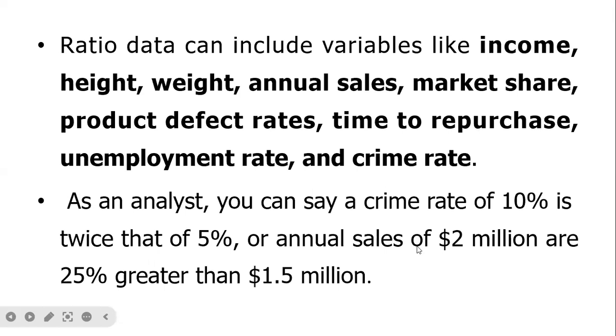Ratio data can include variables like income, height, weight, annual sales, market share, product defect rates, time to repurchase, unemployment rate, and crime rate. As the analyst, you can say crime rate of 10 percent is twice that of 5 percent, or annual sales of $2 million, 25% is greater than $1.5 million.